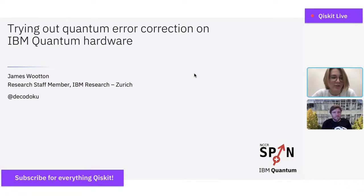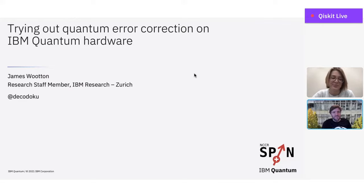That's also when he started using the quantum computers that IBM had just put on the cloud, which led him to joining the IBM Research Lab in Zurich in 2018, continuing to work on both error correction and quantum computation outreach. Thank you so much for being here today, James. I'll let you take it away. I think we have your slides pulled up.